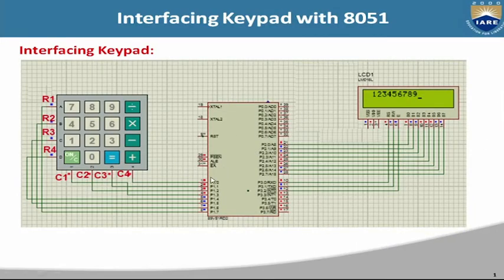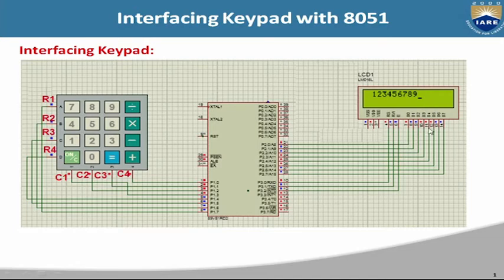This shows the hardware connections of the 4x4 matrix keypad with the 8051 microcontroller. Whenever we press any key on this keypad, the same number will display on the LCD screen. The keypad contains 4 rows and 4 columns: R1, R2, R3, R4 and C1, C2, C3, C4. The keypad is connected to Port 1, the LCD data lines are connected to Port 2, and the control pins of the LCD are connected to P3.0, P3.1, and P3.2 respectively.